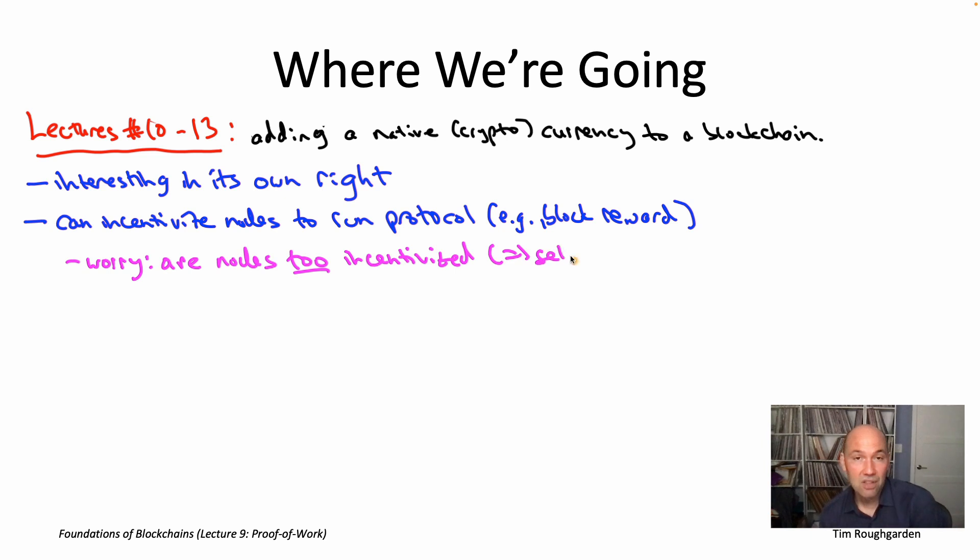So that's going to be exactly the topic of the next lecture, of lecture number 10. We're going to ask that question, with the way block rewards are handled traditionally in Nakamoto consensus, like in the Bitcoin protocol, is it true that acting like an honest node is a profit maximizing behavior for nodes running the protocol? And we'll see that at least in some cases, the answer is actually no. So there are some additional incentive issues that enter the picture when you introduce block rewards into longest chain consensus. And we'll study that in detail in lecture number 10.